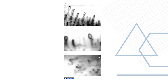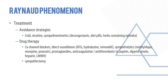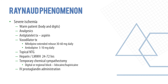Treatment for Raynaud's involves avoiding cold, nicotine, sympathomimetics, decongestants, diet pills, and herbs containing ephedrine. Drugs include calcium channel blockers, direct vasodilators, sympatholytics, prostaglandins, anticoagulation, and antithrombotics. Sympathectomy may be considered in severe disease. For severe ischemia: warm the patient, use analgesics and antiplatelets; vasodilators such as nifedipine extended-release 30–60 mg daily or amlodipine; topical nitroglycerin; heparin or low-molecular-weight heparin for 24–72 hours; temporary chemical sympathectomy via digital or regional block; and IV prostaglandin administration.